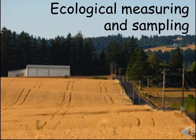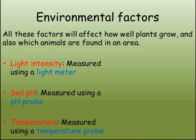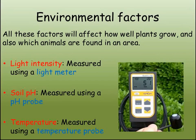Let's look first at some of the environmental factors that affect where species are found. We're looking here at plants as well as animals, so one of the most important factors to consider is light intensity. This can be measured using a light meter, and using this ecologists can compare open and shaded areas for example.